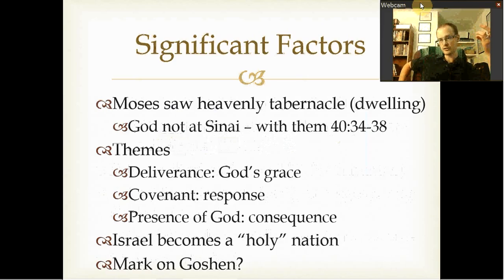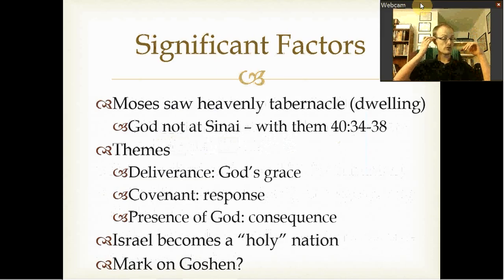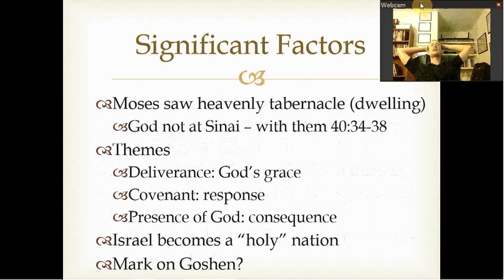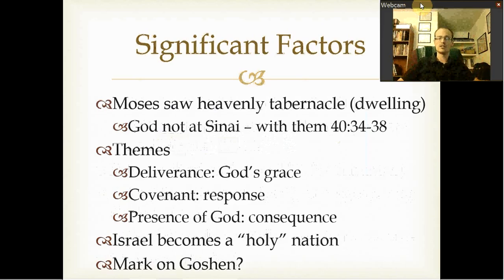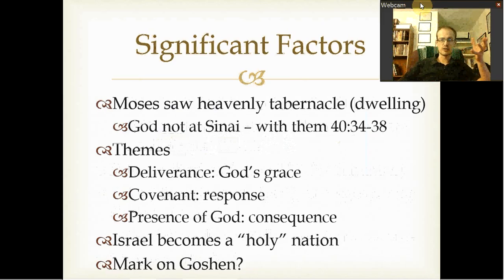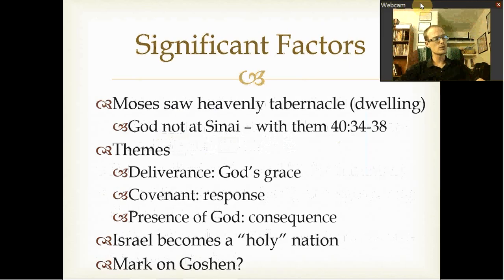Some themes of Exodus: First, deliverance — God's grace was supreme and he saved them, not themselves. Second, the covenant — there was a necessary response from God's people. God had saved them and it demanded a response; they were expected to live differently. We also see the presence of God and the consequences of it — for the Egyptians it was bad, for the Israelites it was good. The same fire can be good or bad depending which side you're on. Israel was supposed to become a holy, priestly nation as a witness to other peoples, but they followed the people instead.